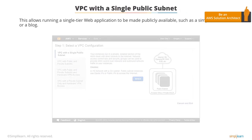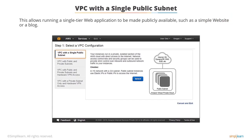VPC with a single public subnet allows running a single-tier web application to be made publicly available, such as a simple website or a blog. You can ensure the security and privacy of such applications by defining security group rules that enable the web server to respond to incoming and outgoing requests.